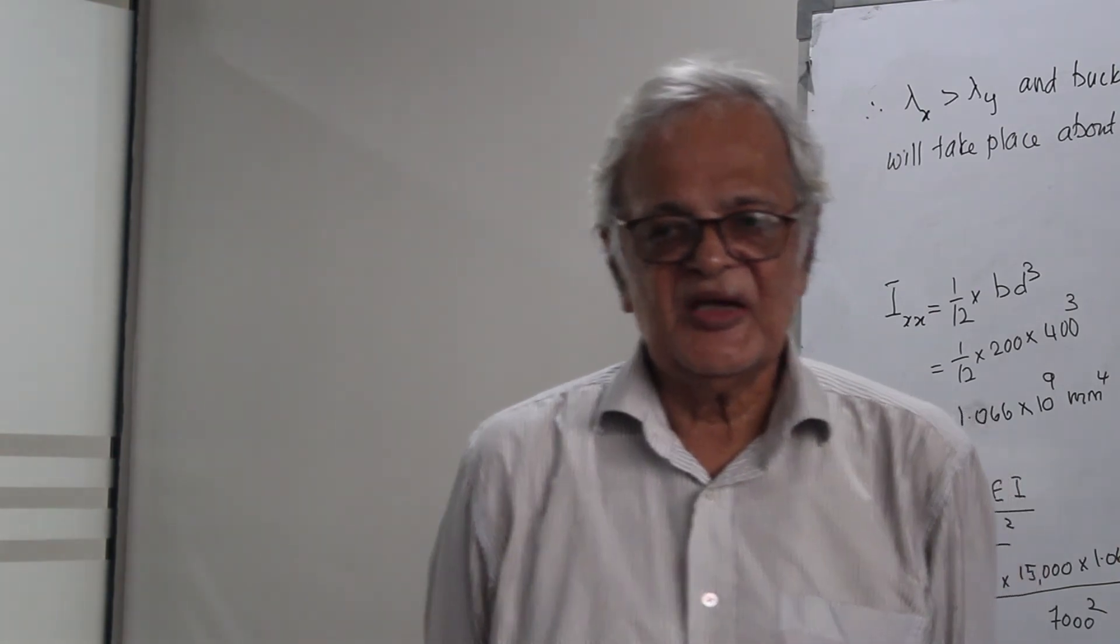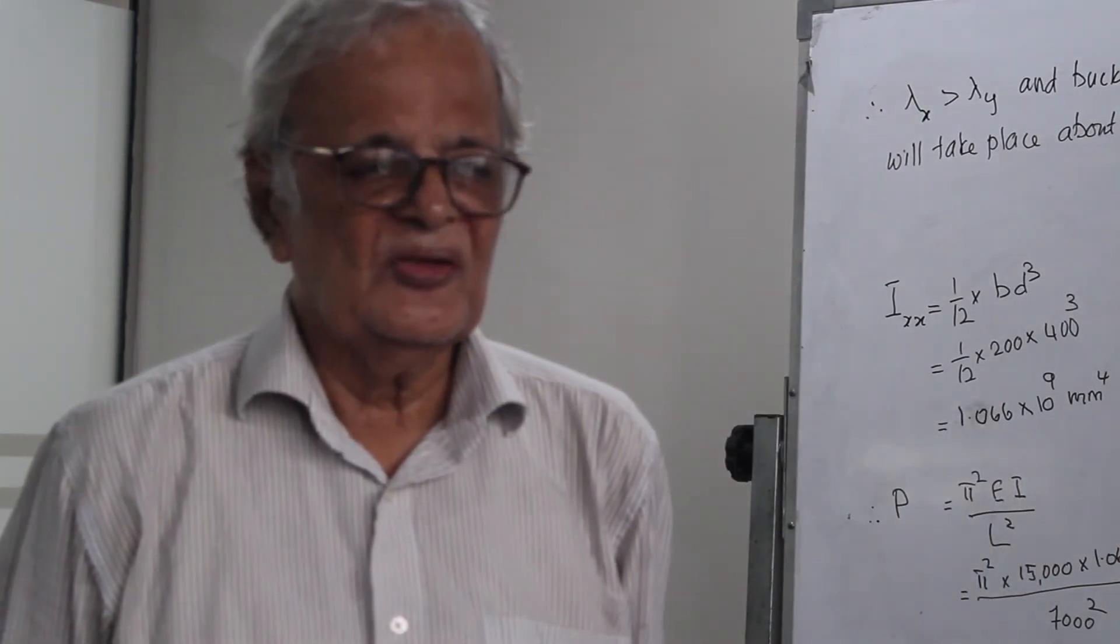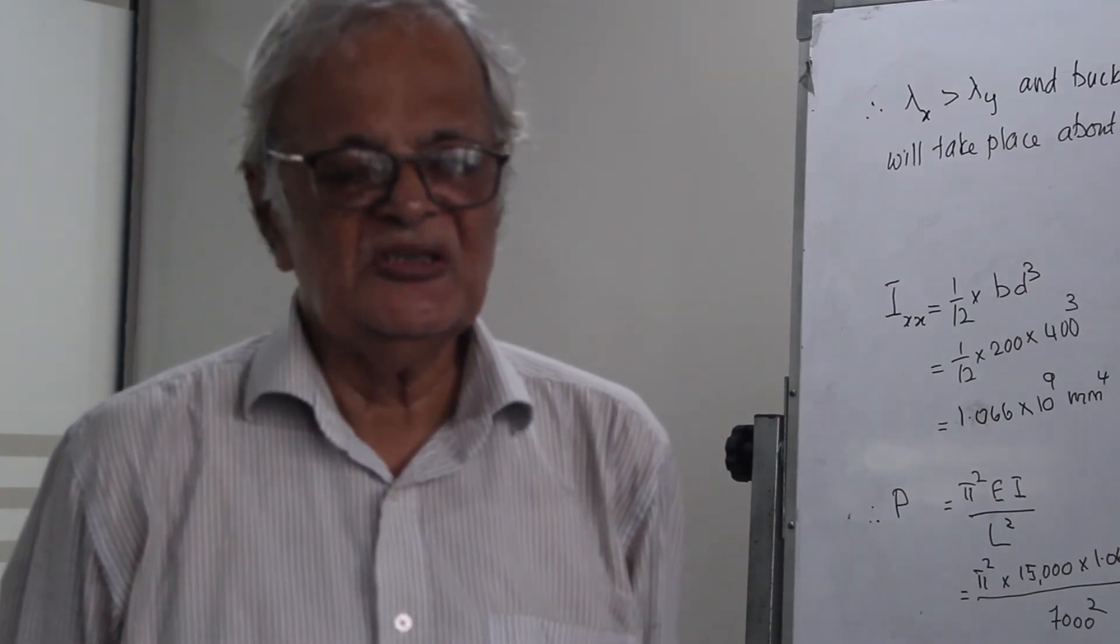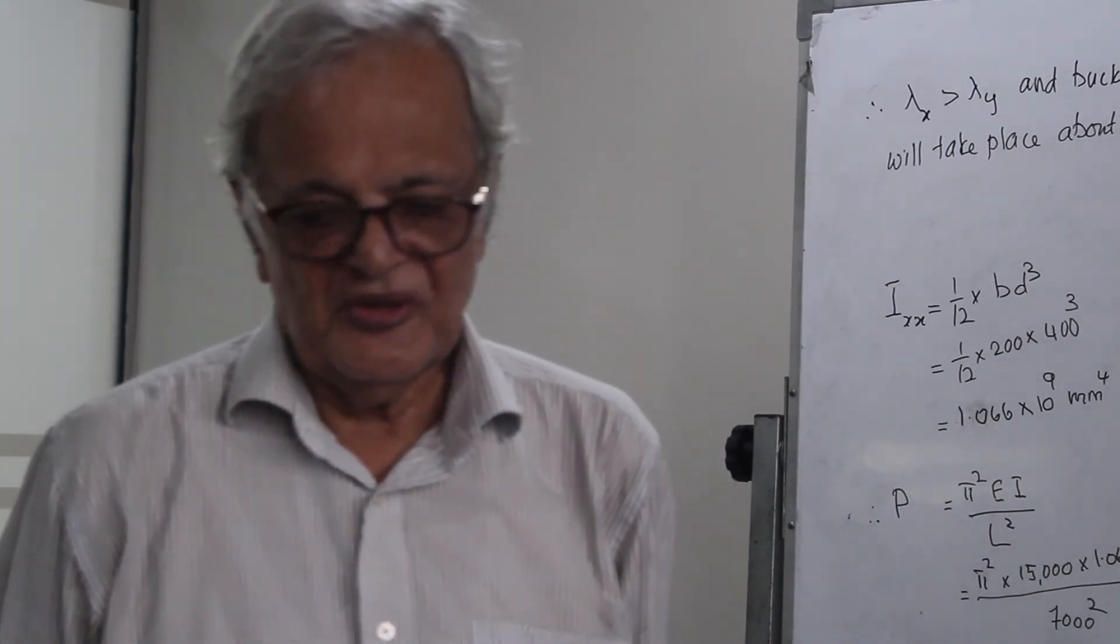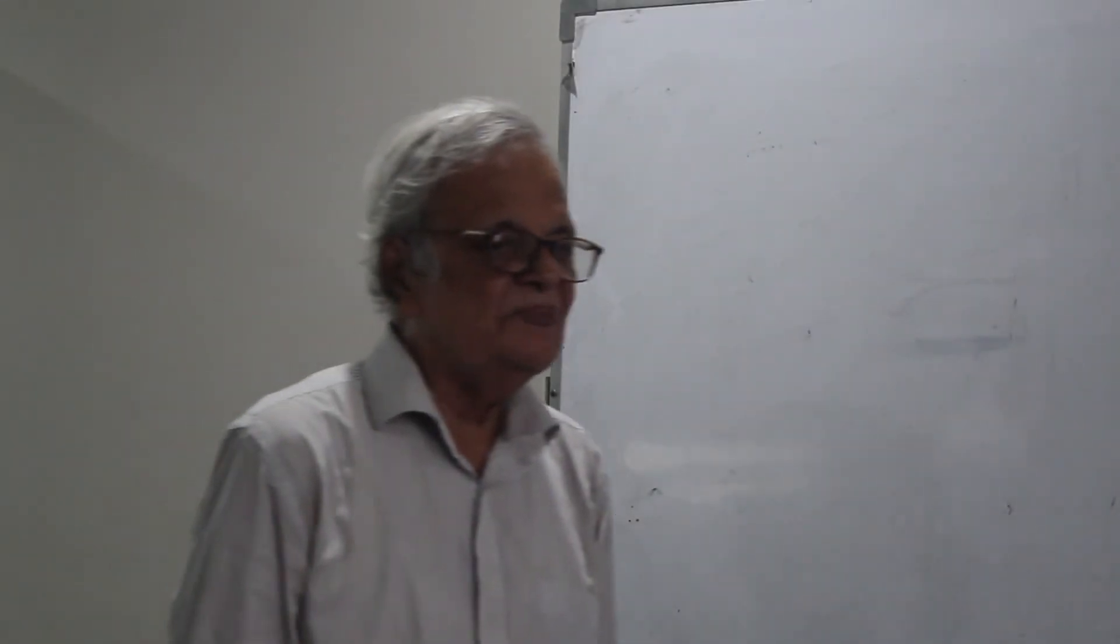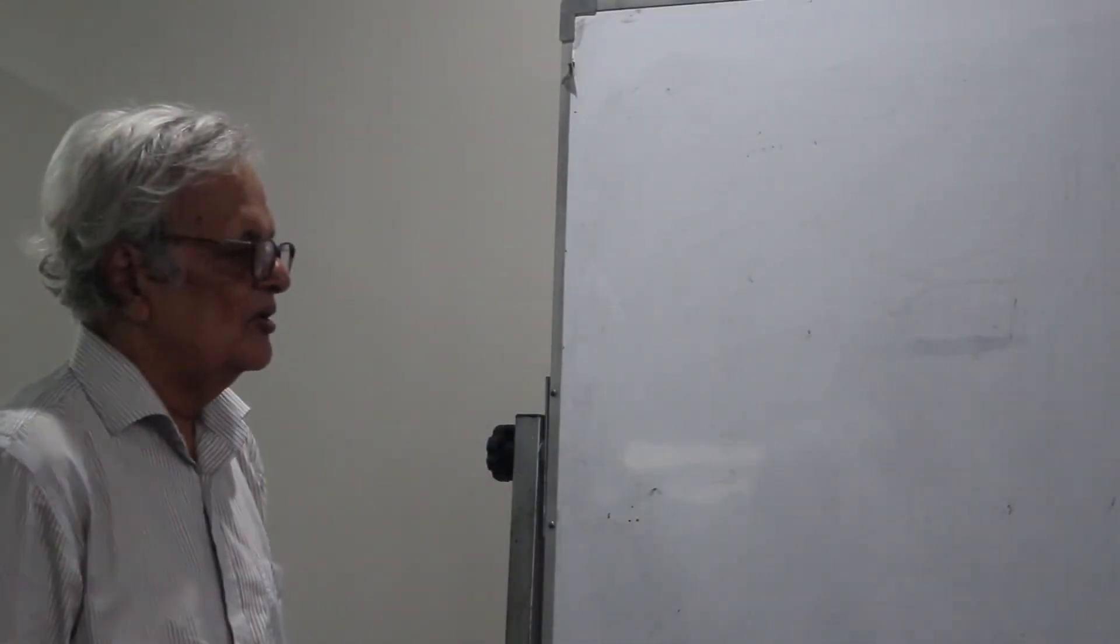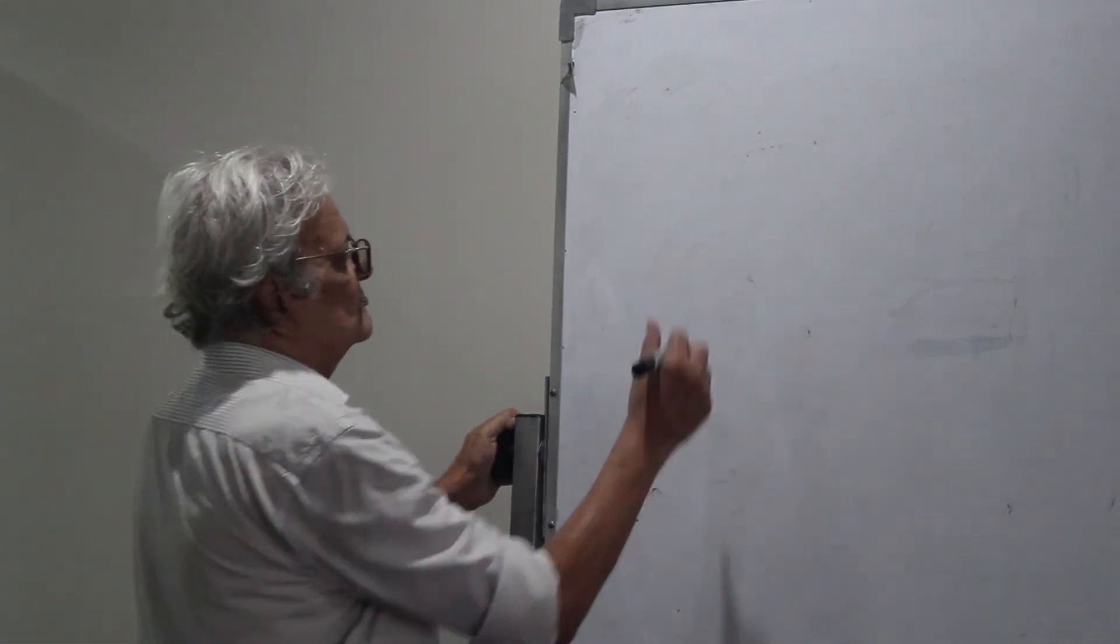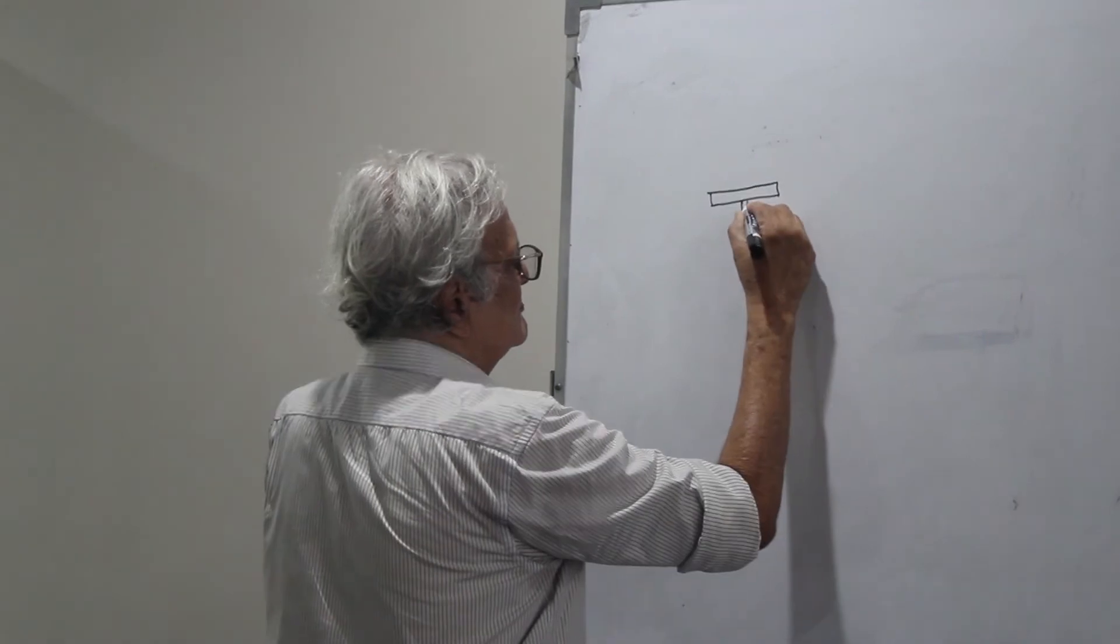In steel design, the members are named according to the cross-sectional shapes of the members. Thus, an I-beam will have a cross-sectional shape of an I.